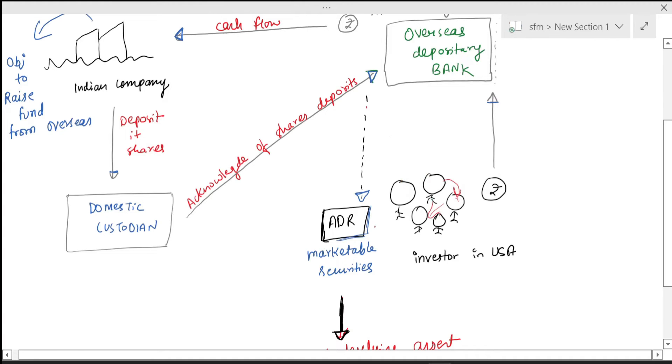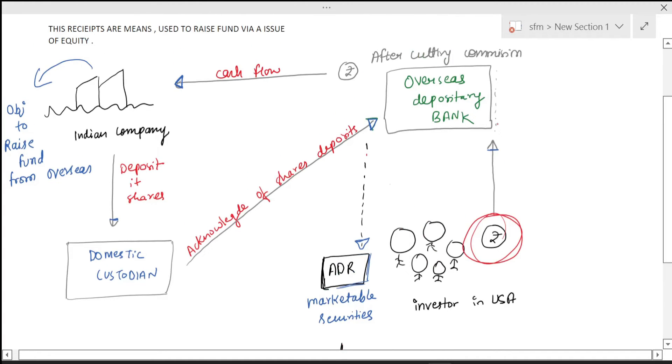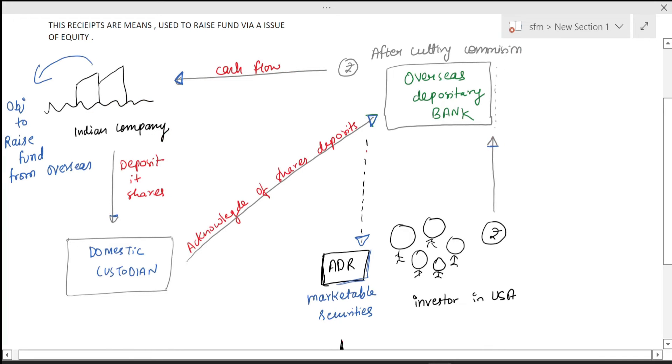After this, the investor's money will go to the bank. The bank will cut some commission so they can also operate. Then the bank will give the money to the Indian company. By this process, the company gets funds from overseas investors.